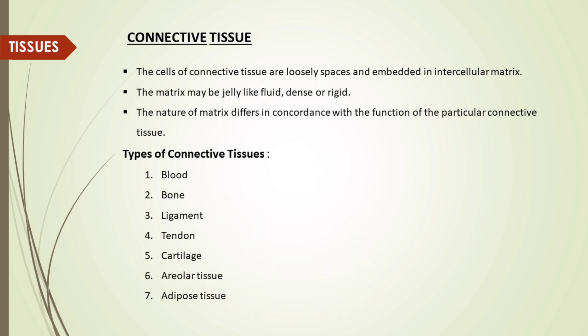The second type of animal tissue is connective tissue. The cells of connective tissue are loosely spaced and embedded in intercellular matrix. The matrix may be jelly-like, fluid, dense or rigid. The nature of matrix differs in concordance with the function of the particular connective tissue.